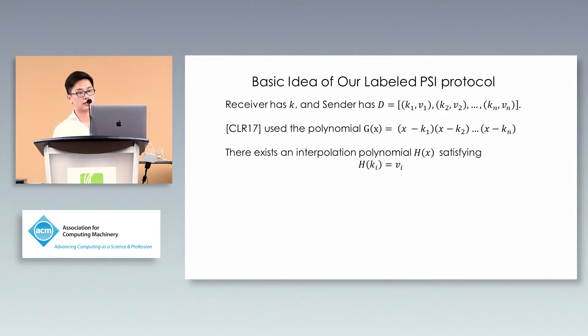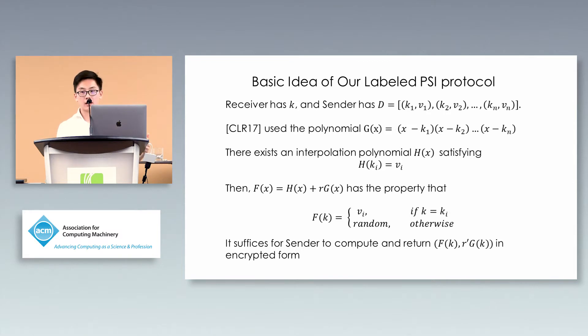Instead of evaluating this polynomial, we can evaluate an interpolation polynomial. You run usual polynomial interpolation and get coefficients of polynomial H(X) such that H at the keys equals the items. Of course, items can be larger than keys. You can split items into chunks where each chunk has the same length as the key. Then construct polynomial F(X). If your key equals one of the keys in the database, it gives you the value; otherwise, random.